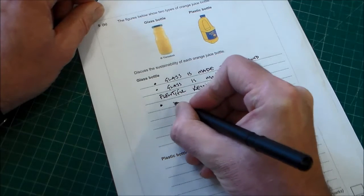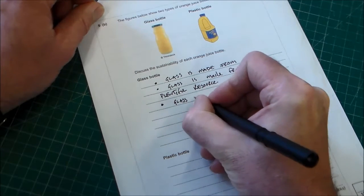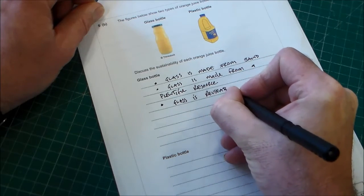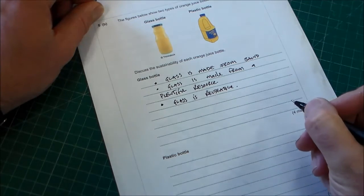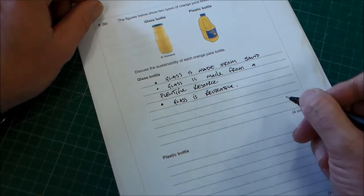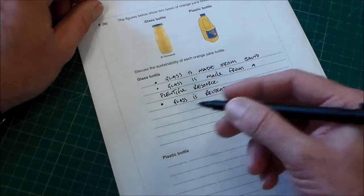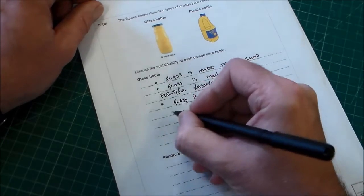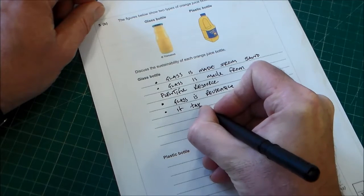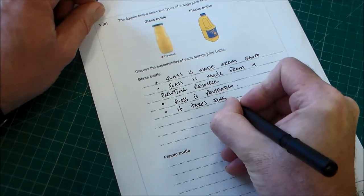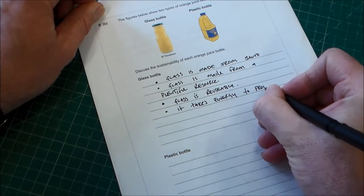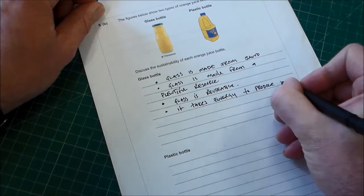Glass is reusable. But it does take energy, so it uses energy to make glass. So although it can be reusable, we could say glass is recyclable, it is recyclable. But I'm going to put for my fourth mark here, it takes energy to produce glass.